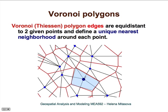How do we create Voronoi polygons? We start with two points and connect them. The point in the middle of this connection is equidistant to both points, so we can create an edge. We then take another point and create an edge through the middle of the connection between two given points. We repeat this for the rest of the points, and by connecting these edges, we create the polygon that forms this unique nearest neighborhood around each point.